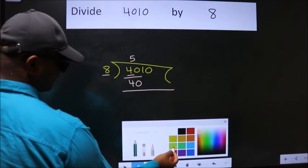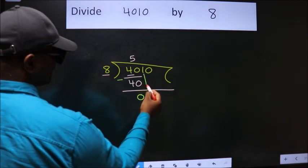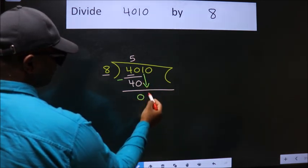Now, we should subtract. We get 0. After this, bring down the beside number. So, 1 down.